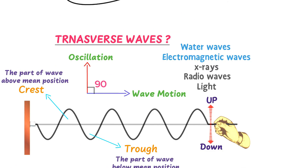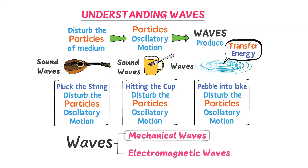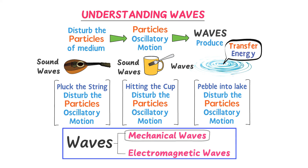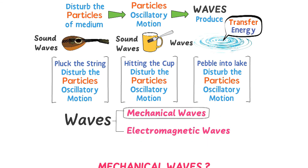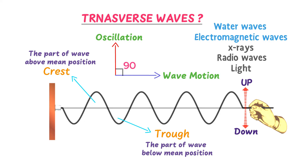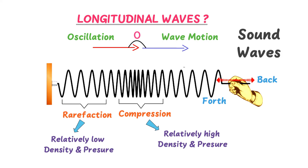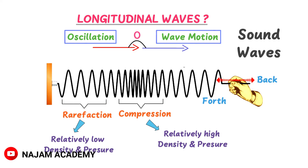To summarize: we learned that if we disturb the particles of any medium such that they start oscillatory motion, waves are produced. There are two types of waves: electromagnetic waves and mechanical waves. Mechanical waves may be either transverse or longitudinal. In transverse waves, the direction of oscillation of particles is perpendicular to the wave motion, while in longitudinal waves, the direction of oscillation of particles is parallel to the wave motion.